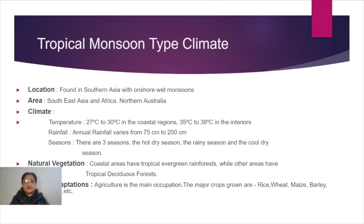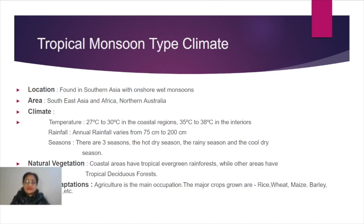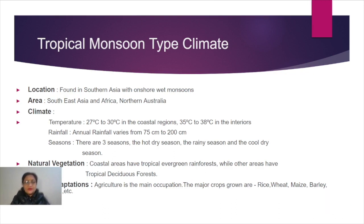In certain areas temperatures even reach 45 to 50 degrees. These places are away from the influence of the sea breeze and land breeze — that is, in the interior parts. In coastal areas, temperatures remain till 30 to 33 degrees, around 27 to 32 or 33 degrees. That is the limit during summers.